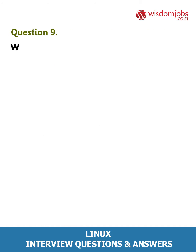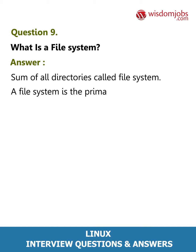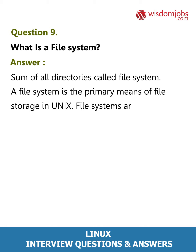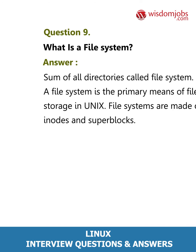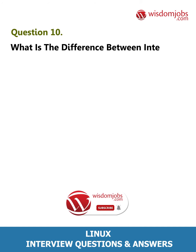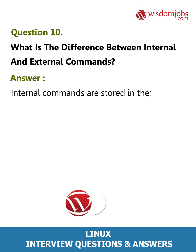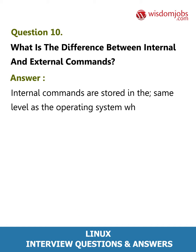Question 9: What is a file system? Answer: A sum of all directories is called a file system. A file system is the primary means of file storage in Unix. File systems are made of inodes and super blocks. Question 10: What is the difference between internal and external commands? Answer: Internal commands are stored at the same level as the operating system, while external commands are stored on the hard disk among other utility programs.